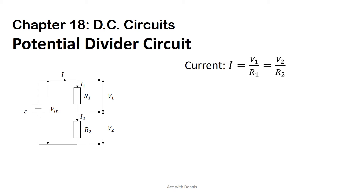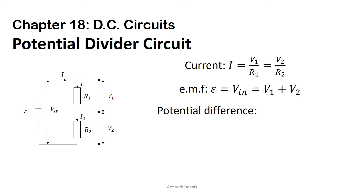For a potential divider circuit, the EMF ε equals V1 plus V2. The potential difference V1 equals R1 over (R1 plus R2) times V_in. The potential difference V2 equals R2 over (R1 plus R2) times V_in.